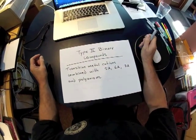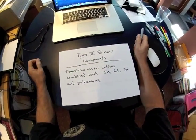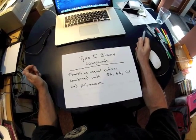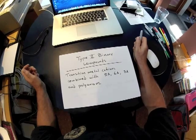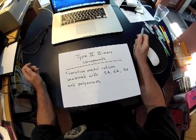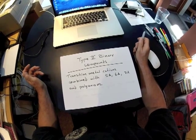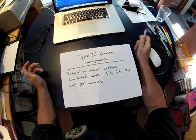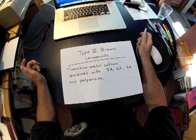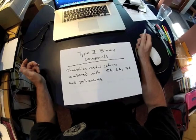Welcome back. This is the second video in the series on naming ionic compounds. The first video was titled Type 1 Binary Compounds, and in order to understand this video, you must have seen or must have watched the video on Type 1 compounds.